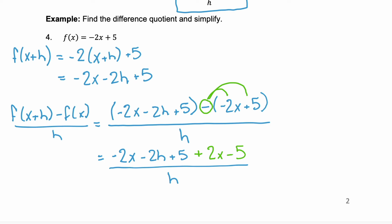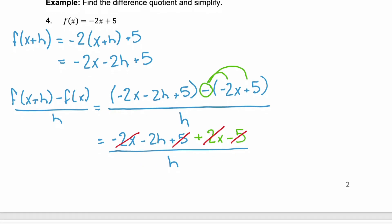Now you want to make sure you're simplifying the numerator. So combine any like terms. Here we have a negative 2x and a positive 2x. Those cancel each other out. We also have a positive 5 and a negative 5 which will also cancel each other out. So our numerator is down to negative 2h and our denominator is h. Since the numerator is negative 2 times h we can simplify those h's. The h's become 1 and negative 2 times 1 is negative 2.